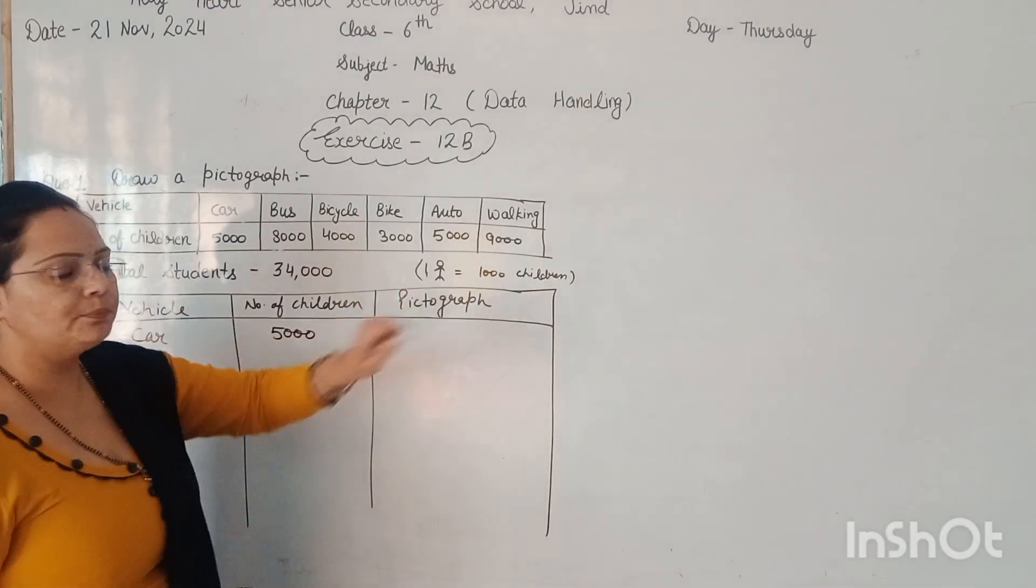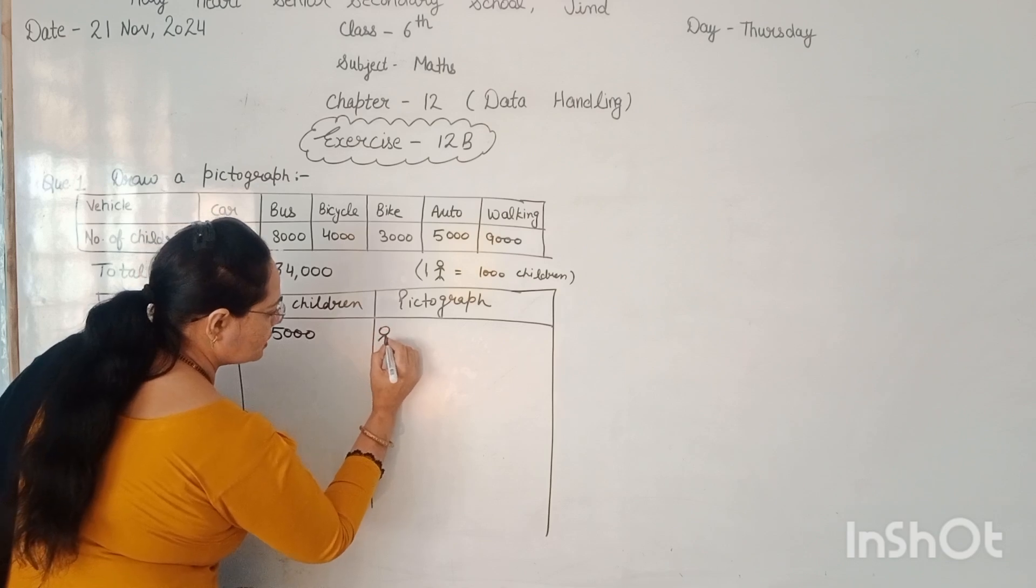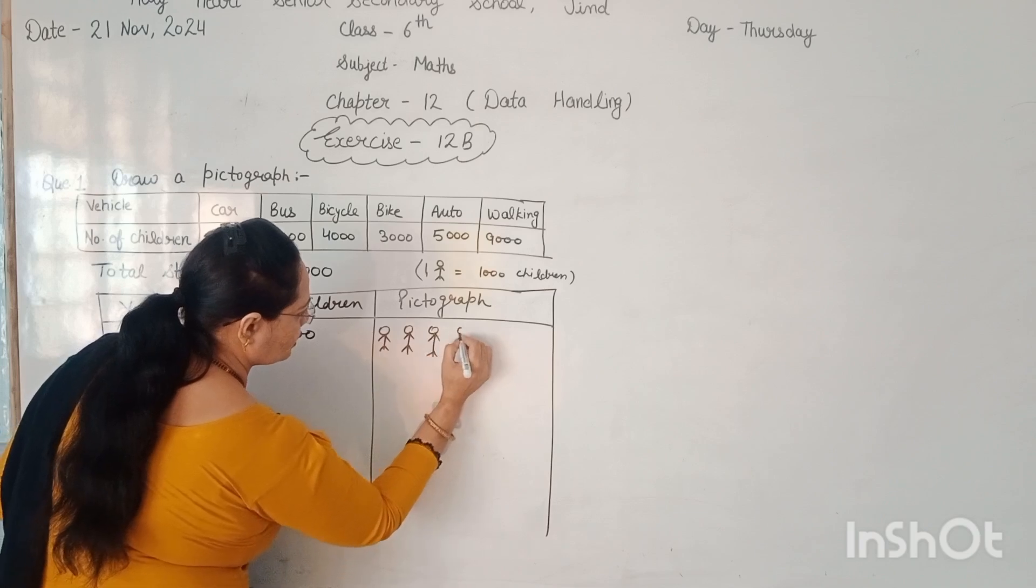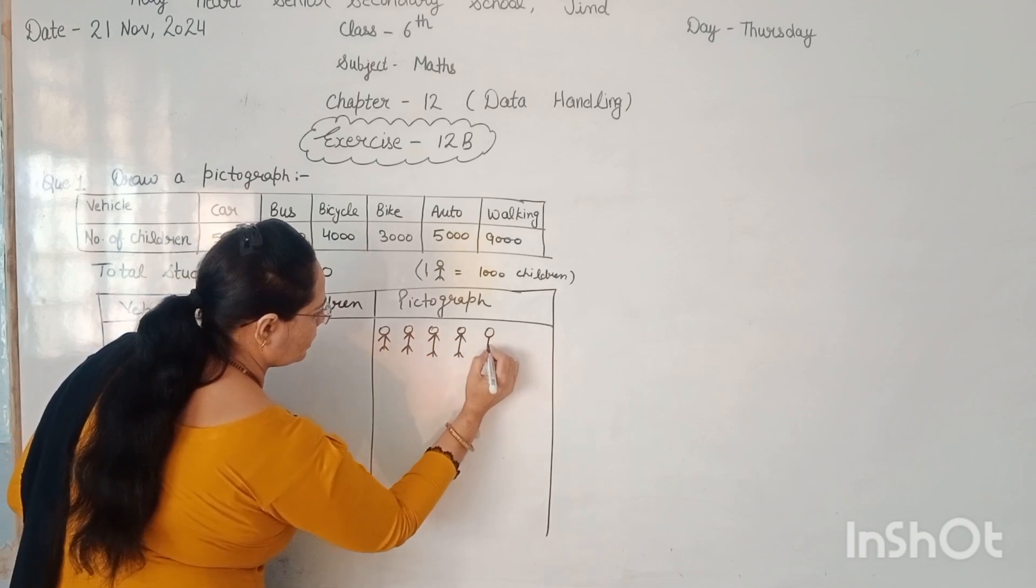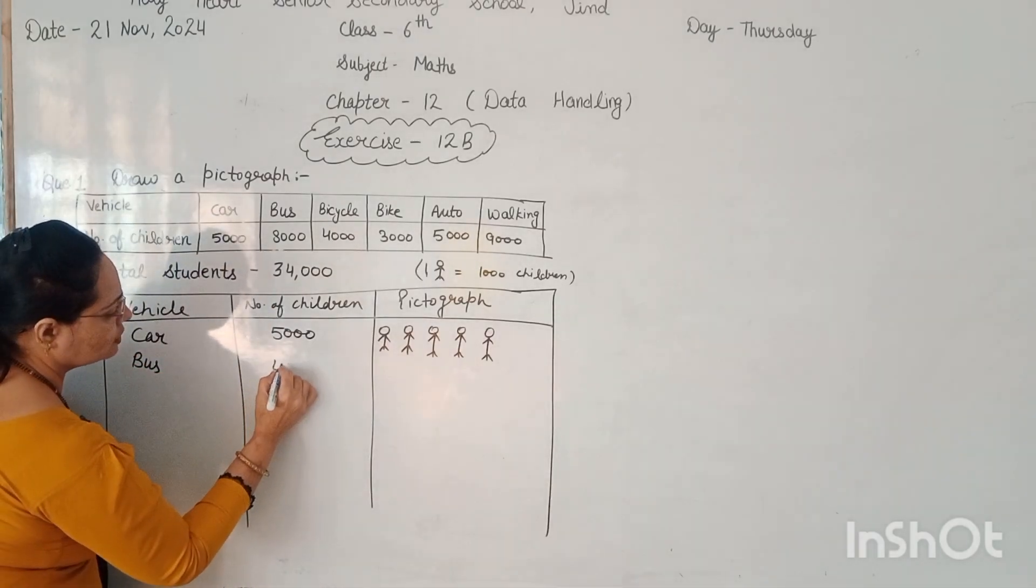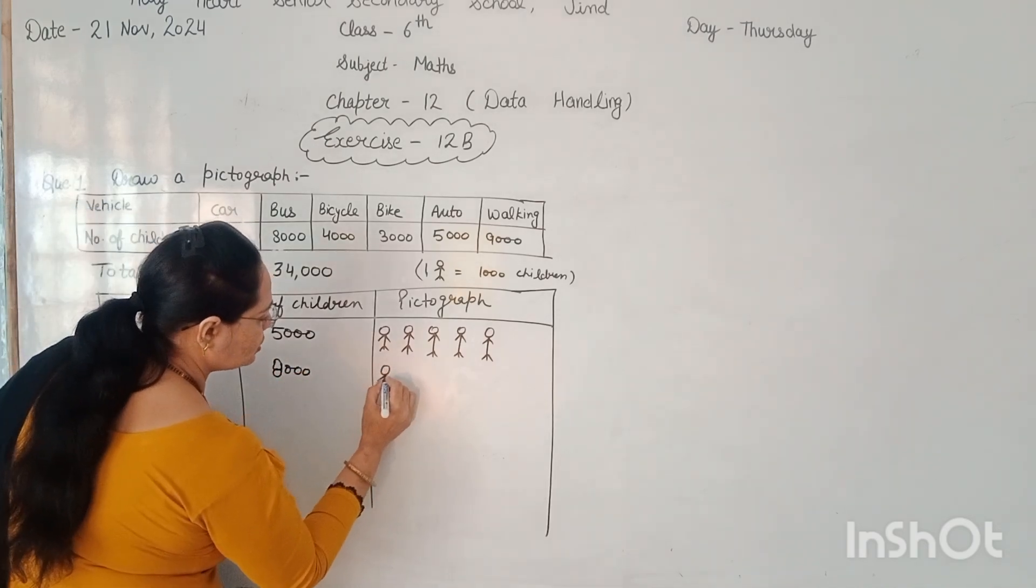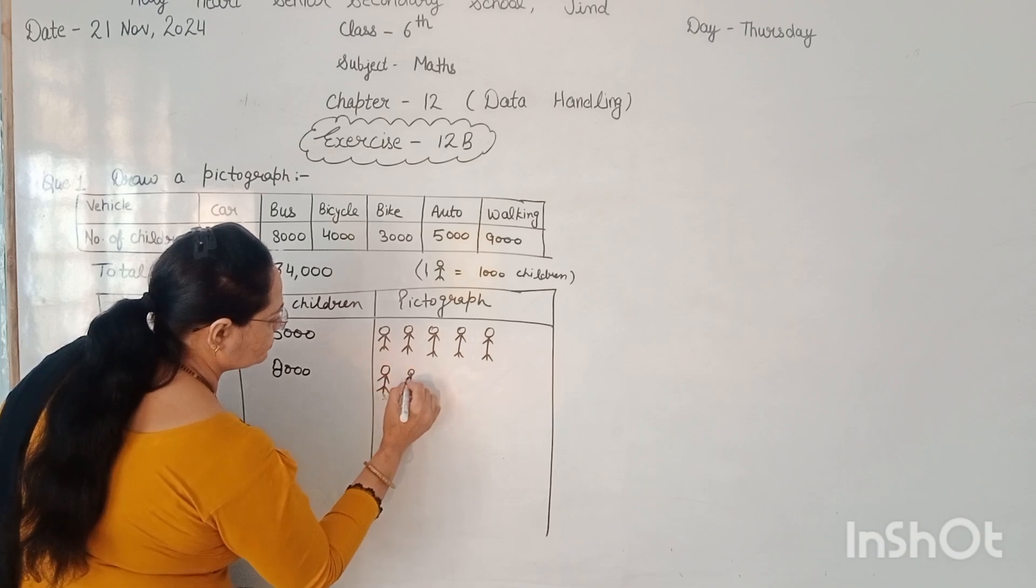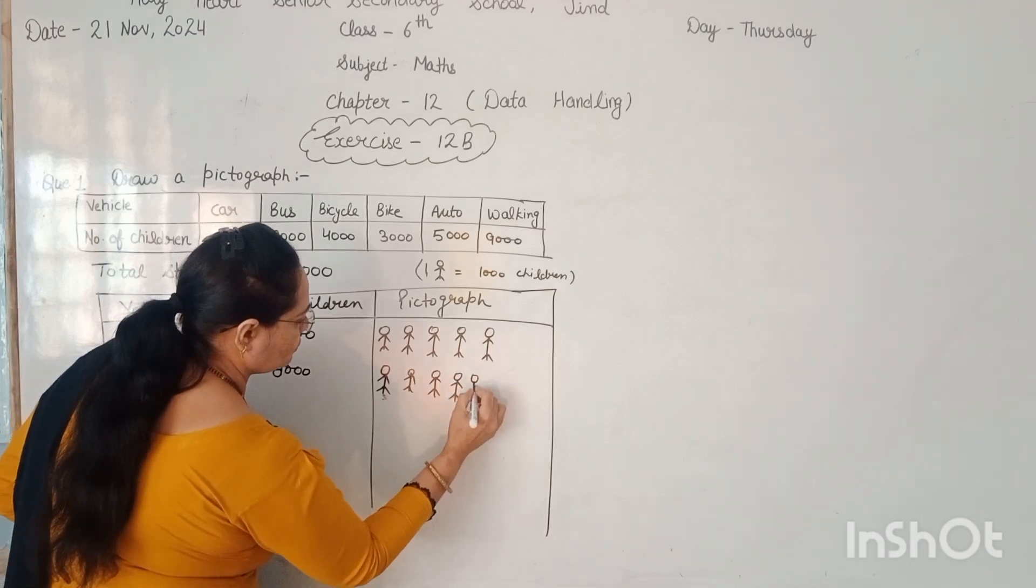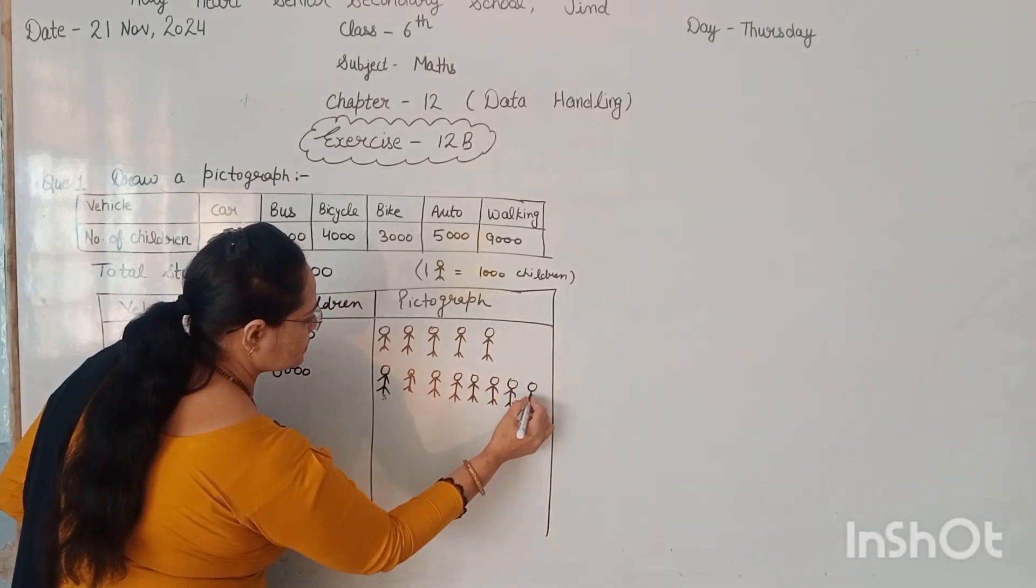So this symbol represents 1,000, so 5,000 represents 5 symbols: 1,000, 2,000, 3,000, 4,000, 5,000. Same thing for bus. How many bus students are here? 8,000. So we include here 8 symbols. 4, 5, 6, 7, and this one, 8.